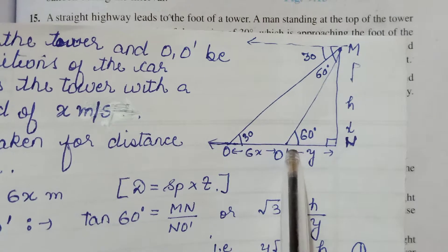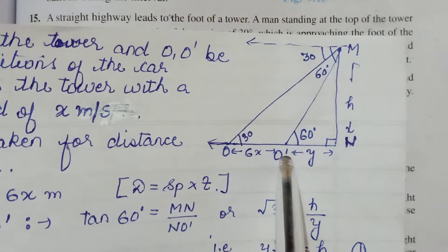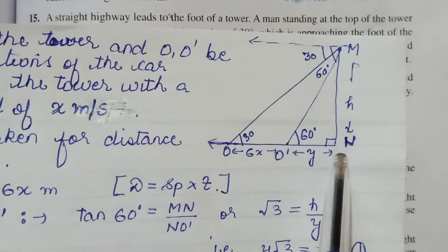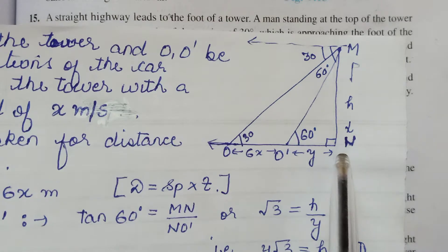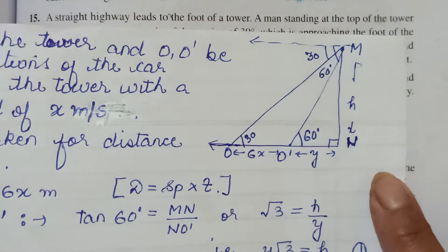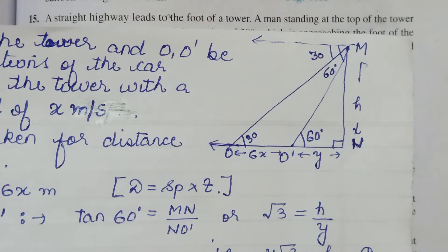And now you will ask that O' is the foot of the tower. N is the foot of the tower. How much time will it take to reach here if it is moving at a uniform speed? Clear?